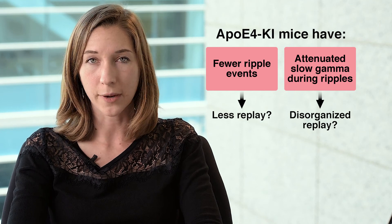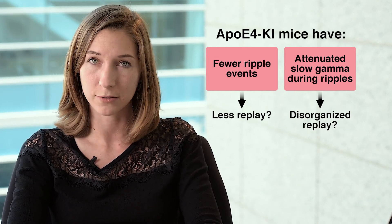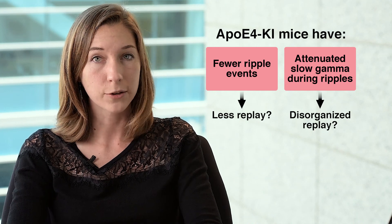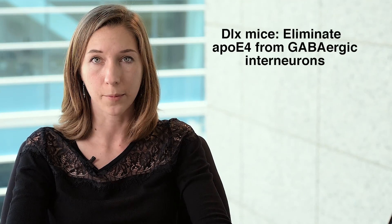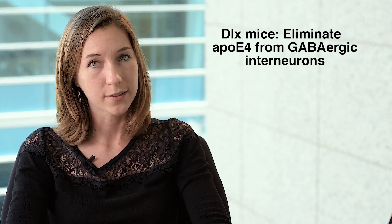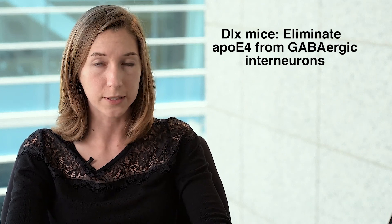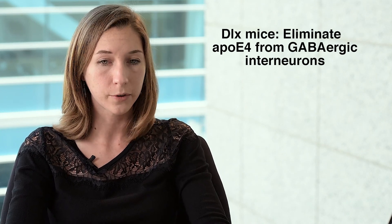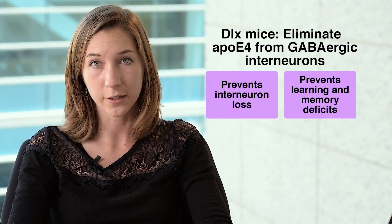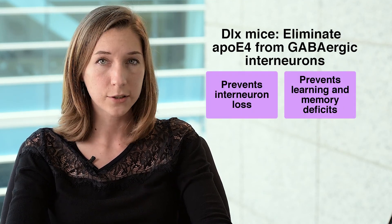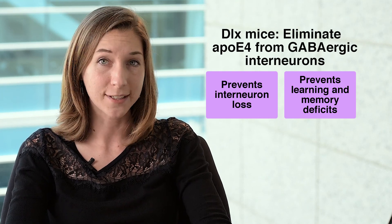Both of these — less replay or disorganized replay — seemed likely to impair memory, so we wanted to see which of the two might truly be driving learning and memory deficits in the E4 mice. To address this question, we took advantage of a line of mice made in our lab in which the ApoE4 gene is selectively removed from all GABAergic interneurons, the cell type lost in the hilus of ApoE4 mice. I'll call these the DLX mice, based on the interneuron-specific Cre driver line that we used.